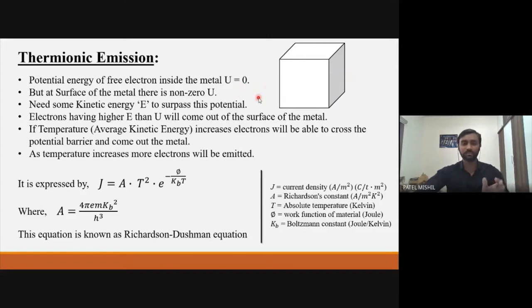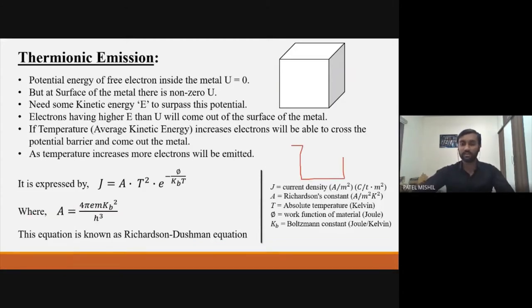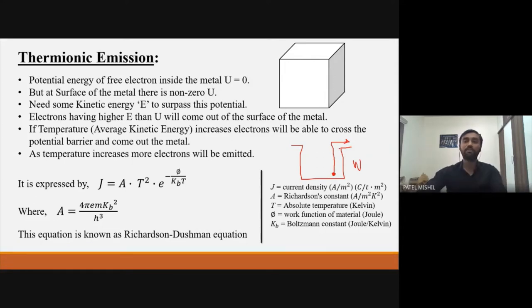But electrons with higher kinetic energy will surpass this potential barrier and come out of the metal surface. Consider this potential barrier of height W — the electron must have higher kinetic energy to escape. As I increase the temperature — and temperature represents average kinetic energy — more and more electrons will be able to come out of this potential barrier, so more electrons will come out of the metallic surface.